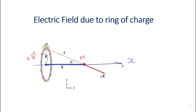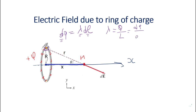In order to find the electric field, we will take an element of charge dq. By definition, dq is lambda times dl — the element of charge equals the density times the element of length. We choose lambda, the linear charge density, because the ring is thin. Lambda is the total charge over total length, or element of charge over element of length. Since the density is uniform, lambda is constant, so dq equals lambda·dl.